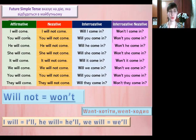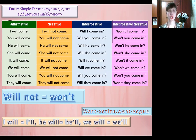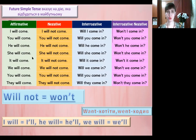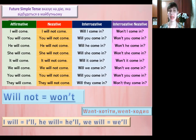Ми бачимо, що стверджувальне речення будується таким чином: I will come, you will come, he will come, she will come, it will come, we will come, you will come, they will come. Що спільного ми побачили? У всіх цих реченнях є слово will – це допоміжне дієслово, яке допомагає будувати майбутній простий час. І також слово come – це перша форма дієслова, інфінітив без частки to. Bare infinitive, як правильно це називати.